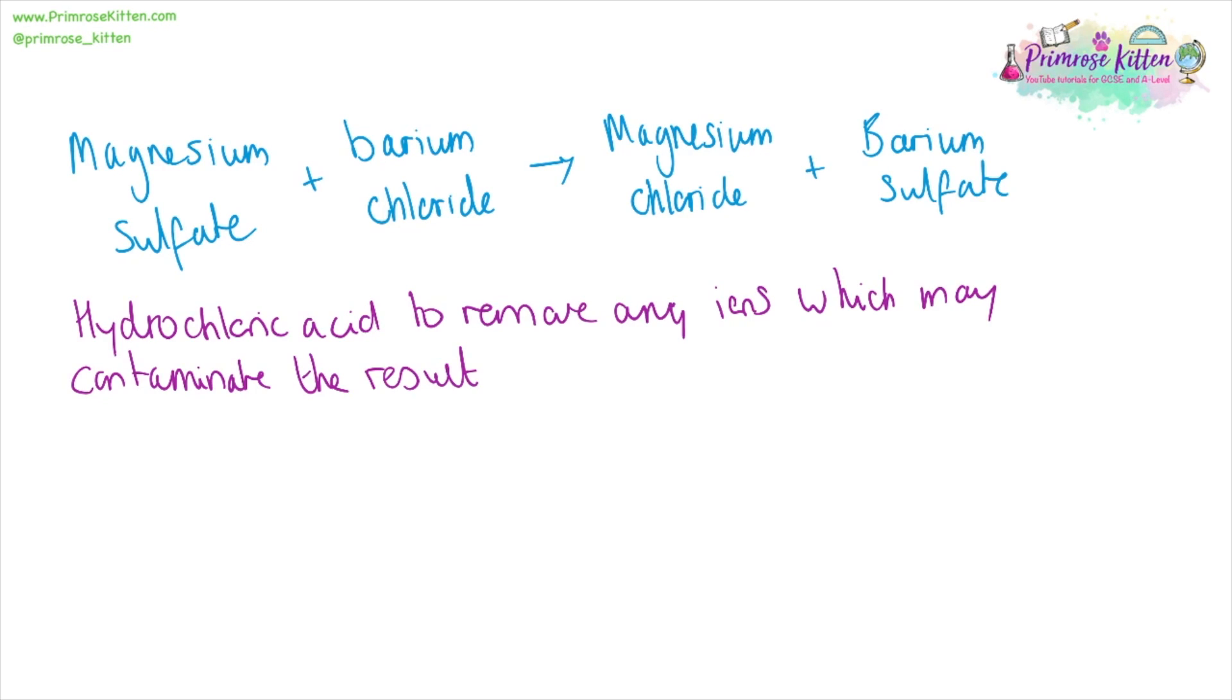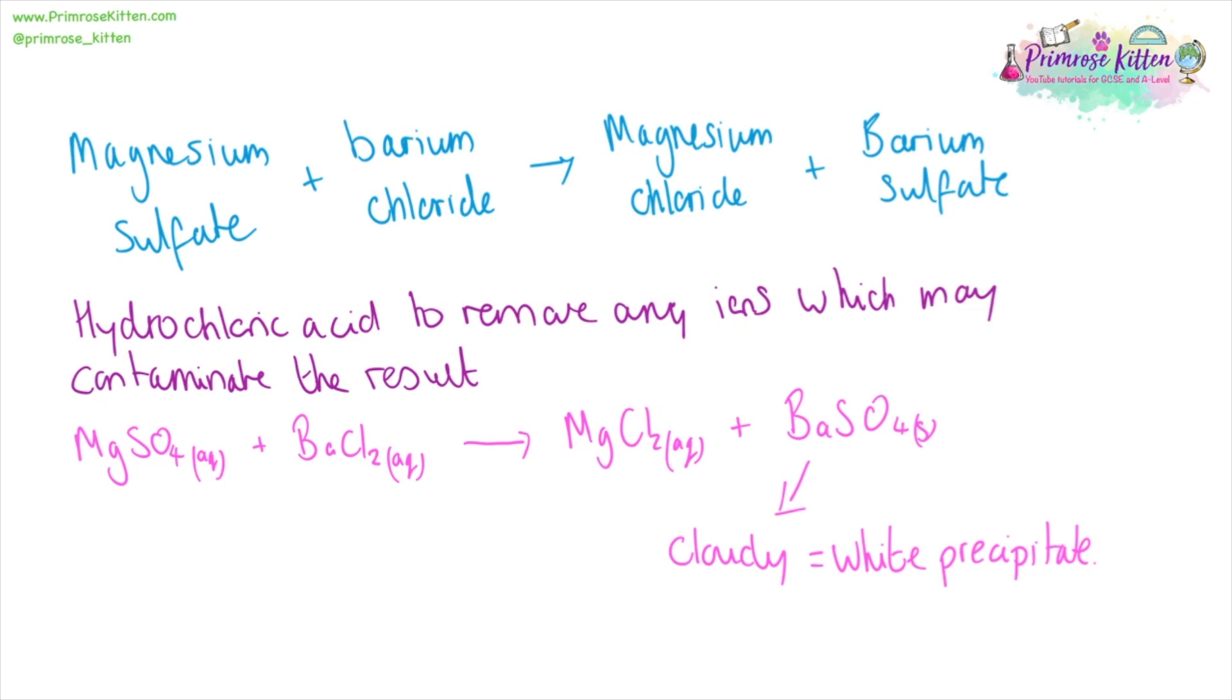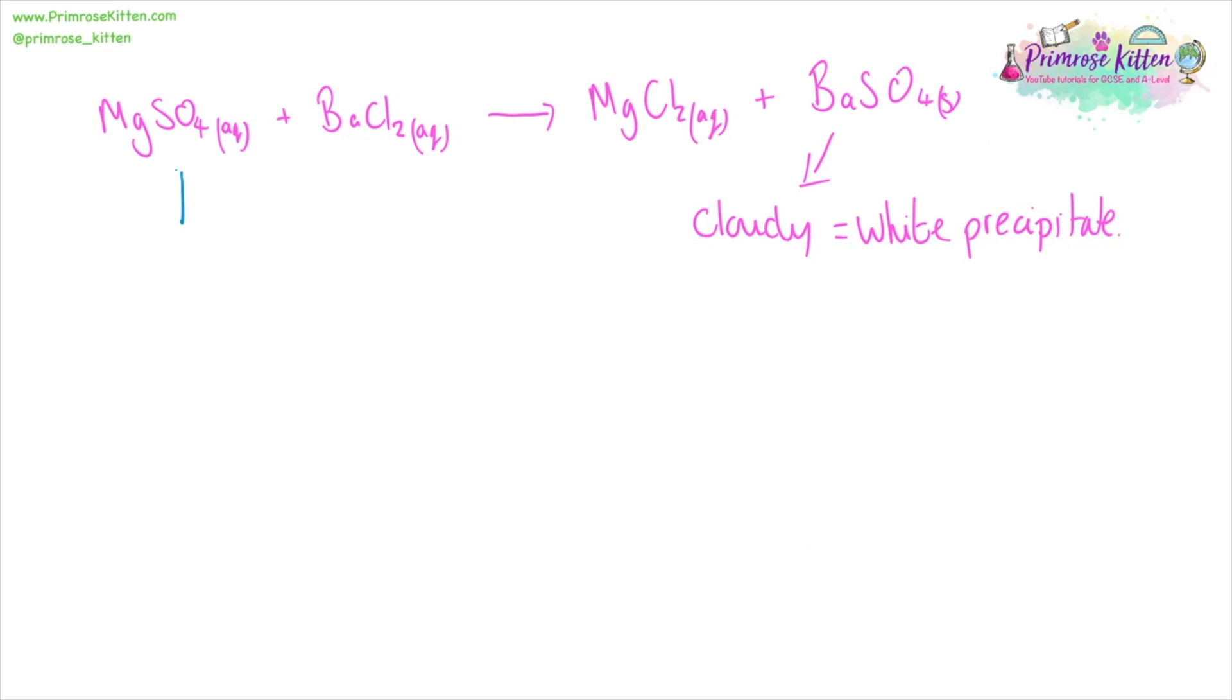Hydrochloric acid can be used to remove any ions which may contaminate the results. Our barium sulfate is going to be solid, and this is going to give us a white precipitate which we are going to see as cloudy, giving us a positive test. Magnesium sulfate is a soluble sulfate, whereas barium sulfate is an insoluble sulfate, which means we can see this result.